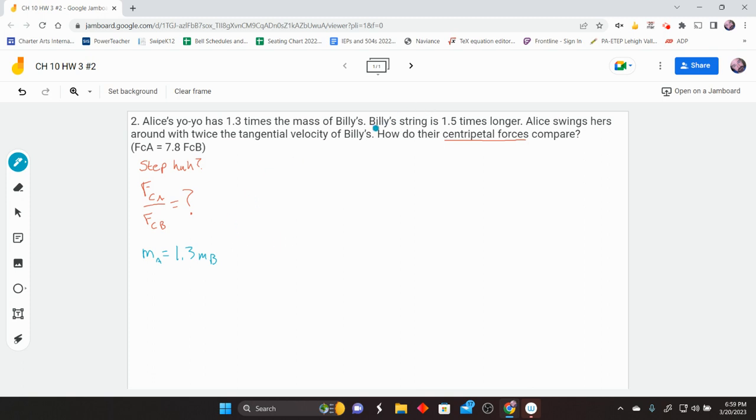Billy's string is 1.5 times longer. So the length of the string is going to be the radius in this problem. So what that means is the radius of Billy is 1.5 times the radius for Alice.